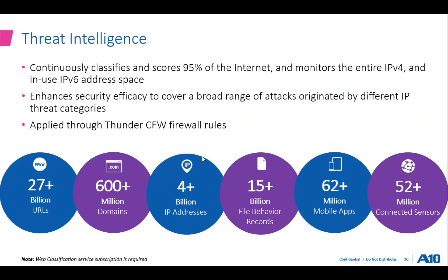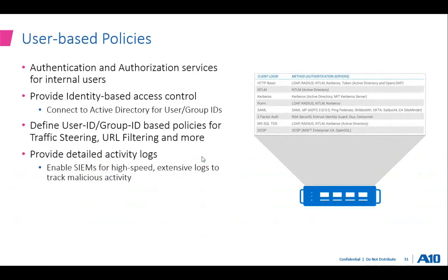Lastly, threat intelligence covers compromised systems, botnets, malware, command and control infrastructure, open DNS relays, geographically blacklisted IP addresses, ransomware servers, and more. This large amount of data can be used to block access to malicious sources. You can apply this through the CFW Thunder Firewall rules to block all access to already-identified malicious destinations.